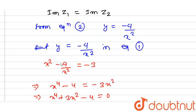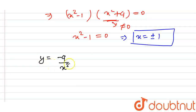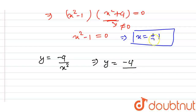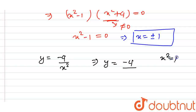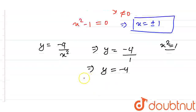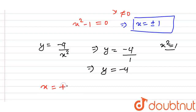Now using y equals minus 4 divided by x squared, and since x equals plus or minus 1 means x squared equals 1 in either case, we get y equals minus 4 divided by 1, that is y equals minus 4. So the final answer is x equals plus or minus 1 and y equals minus 4.